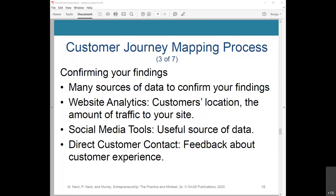There are many sources of data to confirm your findings. Certain data is useful in confirming findings made from your journey map. Sources include website analytics, social media tools, and direct customer contact. Website analytics will provide information including your customer's location, the amount of traffic to your site, and the number of clicks on each page. Analytics also expose weaknesses by showing points where customers may have become frustrated and abandoned the site altogether.